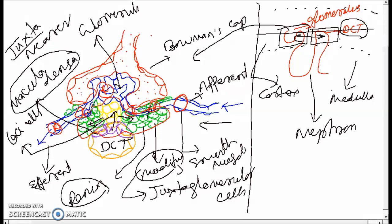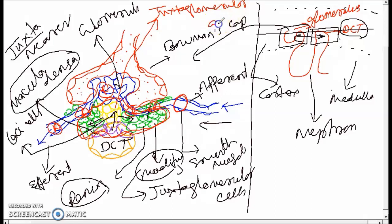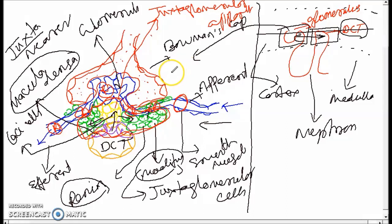Collectively, this whole system forms a unit called an apparatus, and we call it the juxtaglomerular apparatus. This juxtaglomerular apparatus helps in maintaining balance within the kidney — sodium reabsorption and pressure — whatever the pressure in the circulatory system.